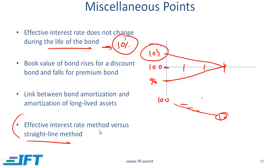Another method for amortization is the straight-line method, which is allowed under US GAAP, where you say the bond is initially at 104 and you bring the value down to 100 using a straight-line method, just like straight-line depreciation. This method simply produces equal amortization over the period. With the effective interest rate method the amortization is not equal, as you can see from the examples discussed. If you are not told what method to use, the default is the effective interest rate method.